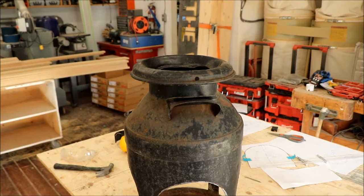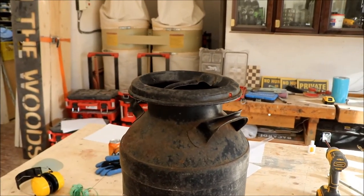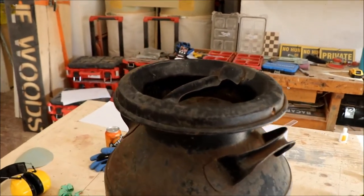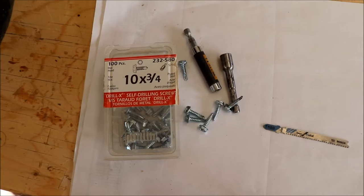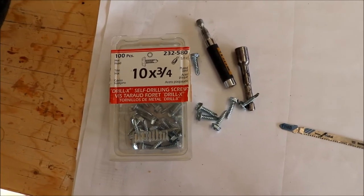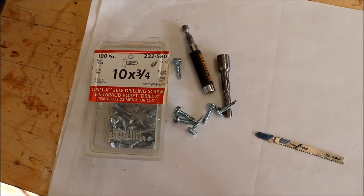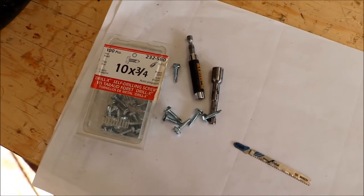The next step is to fasten the lid to the carcass of the milk can so we can run the ready rod through this handle and hang it from the bracket. For fastening the lid to the carcass, we're going to use some self-tapping metal screws—they're 10 by 3 quarter. You could probably use a regular screw if you pilot it, but these are self-tapping and you have to use a hex head driver.